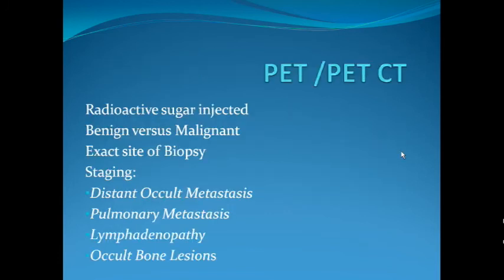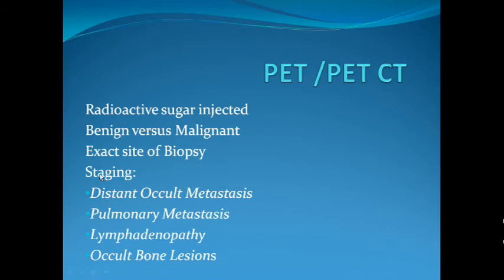PET scan has almost replaced radionuclide bone scanning wherever it is available. Instead of radioactive dye, a radioactive sugar is injected. It helps in distinguishing benign from malignant pathology, identifies the exact site for biopsy by showing where active tumour tissue is present, assists in staging by revealing distant occult metastasis, pulmonary metastasis, local lymphadenopathy, and occult bone lesions — making it a single test that can tell us about the spread of the tumour whether by lymph node, pulmonary, or skeletal routes.